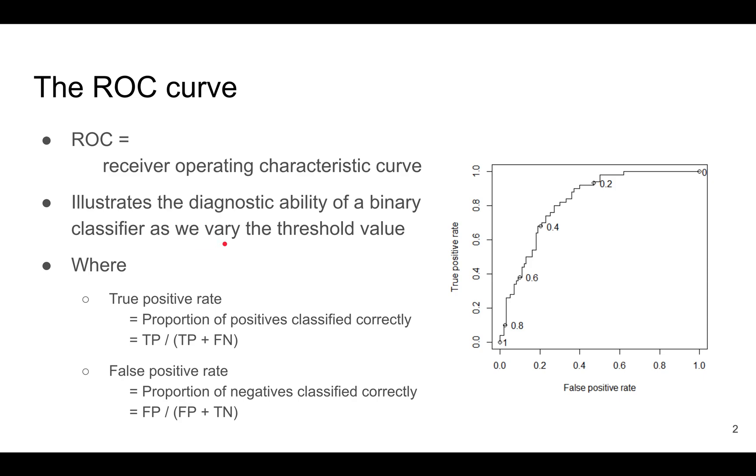When we plot the ROC curve, the y-axis is the true positive rate, while the x-axis is the false positive rate. The true positive rate is basically the proportion of positives that we classified correctly, whereas the false positive rate is the proportion of negatives that we classified correctly.